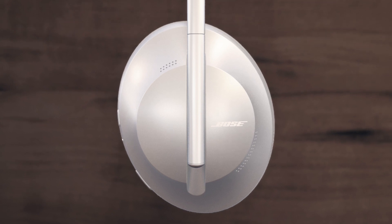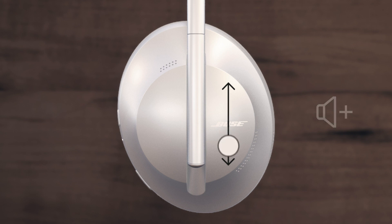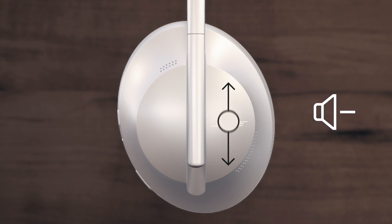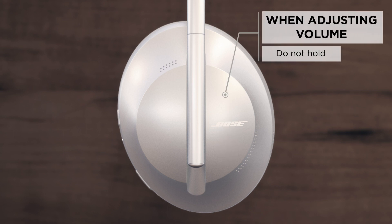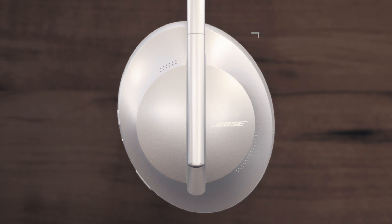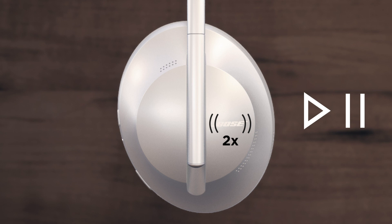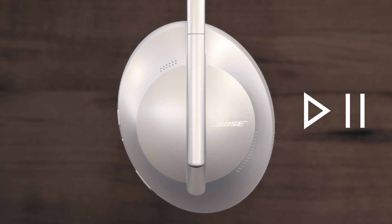Volume control is handled by swiping vertically up or down on the right earcup. Swiping up will increase the volume setting, and swiping down will decrease it. Make sure that you do not hold your finger on the earcup — just simply start and end your swipe. To play and pause media, simply double tap the right earcup directly on the Bose logo. These actions will play and pause any media that is currently playing on your computer.